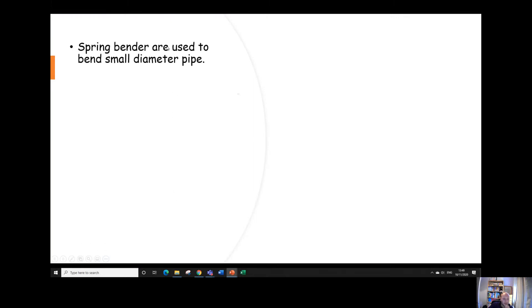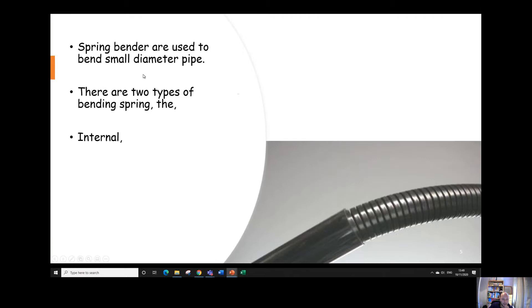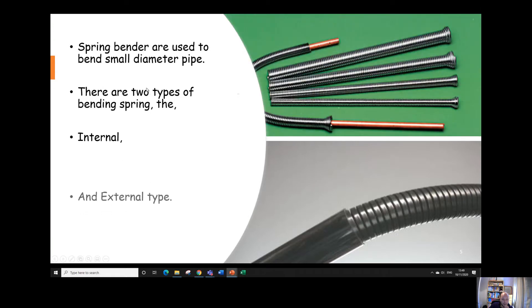The spring benders are used to bend small diameter pipe. There's two types, an internal and an external type. And you can see exactly what the difference is here really. The external one goes over the outside of the pipe, the internal one goes on to the inside of the pipe. The purpose of both of them is it supports the pipe as it's bent to stop it from kinking.